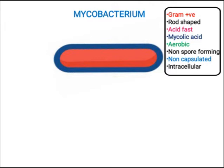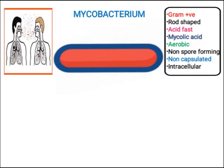Regarding the mode of transmission of mycobacterium — specifically Mycobacterium tuberculosis — it can transmit from one person to another via air droplets or the aerosolic route. When an infected person is coughing or sneezing, air droplets are released from their respiratory system and can transmit the bacteria to another person.